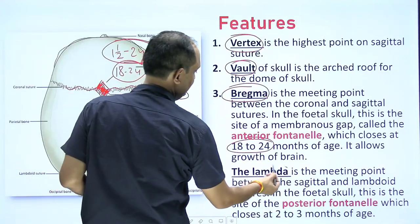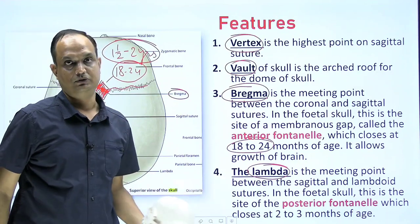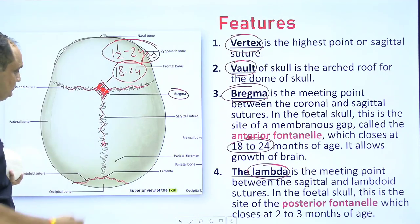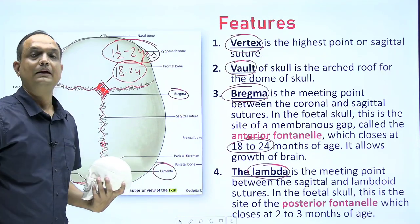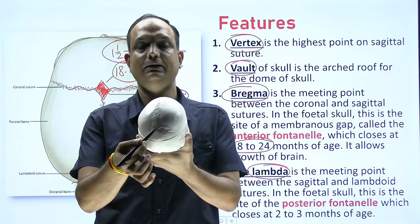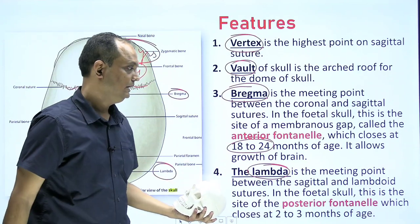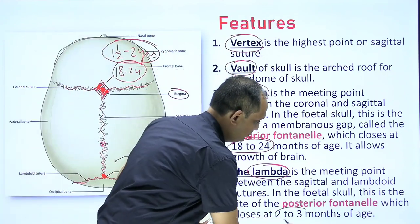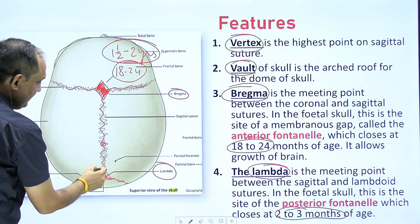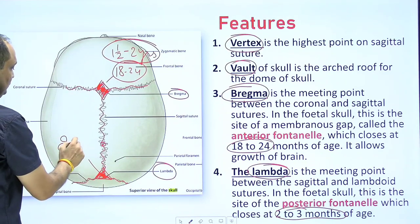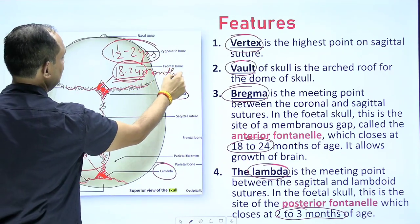What is lambda? Lambda is the meeting point between the sagittal suture and the lambdoid suture — the point of intersection on the posterior side. At lambda, there is a posterior fontanelle, while bregma has the anterior fontanelle. The posterior fontanelle ossifies by the age of 2 to 3 months of life, while the anterior fontanelle ossifies at 18 to 24 months after birth.